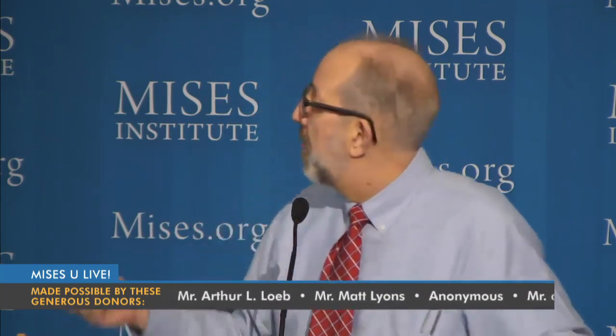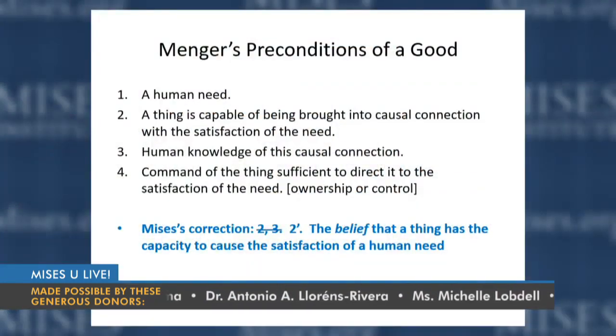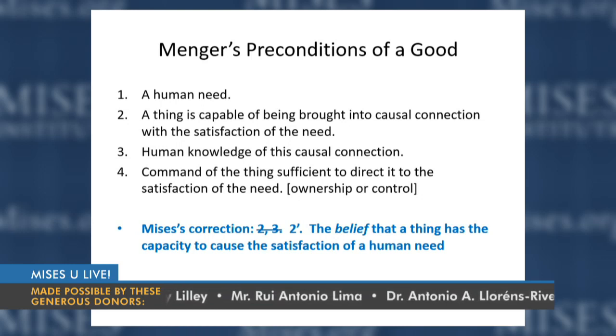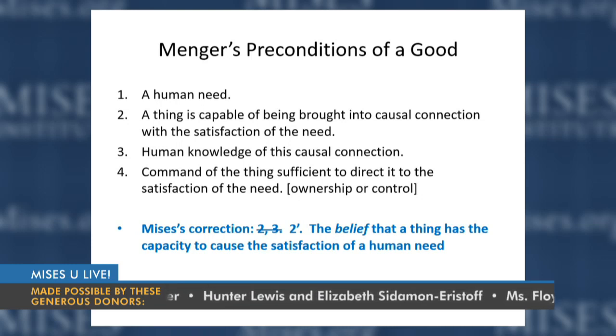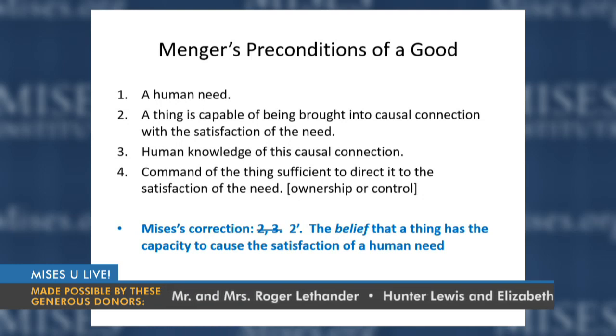One of the central elements in the want-satisfaction process that makes up the economy is goods. In his first chapter, Menger defines the preconditions for something to be a good: a human need, a thing capable of being brought into causal connection with satisfying that need, human knowledge of this causal connection, and the person having sufficient command of the thing to direct it to the satisfaction of the need — that is, ownership or control.